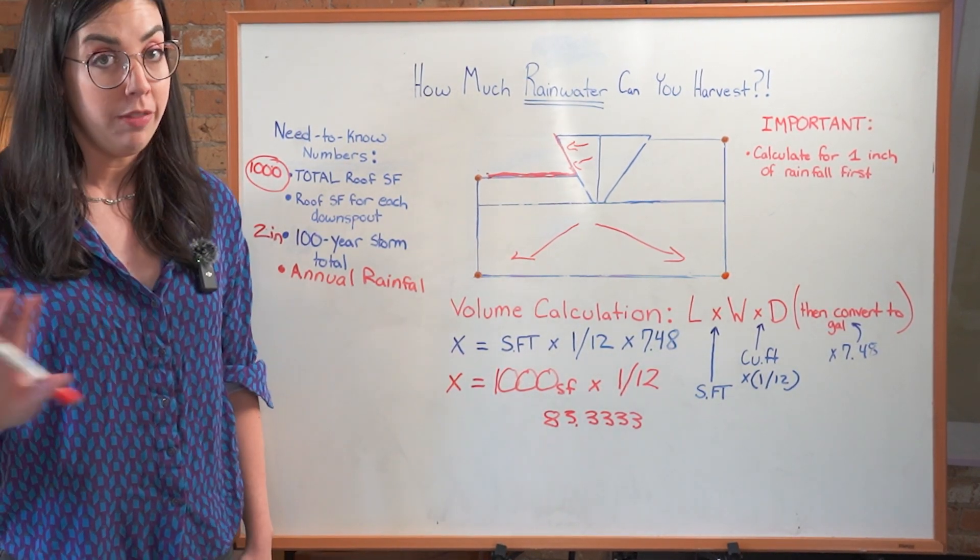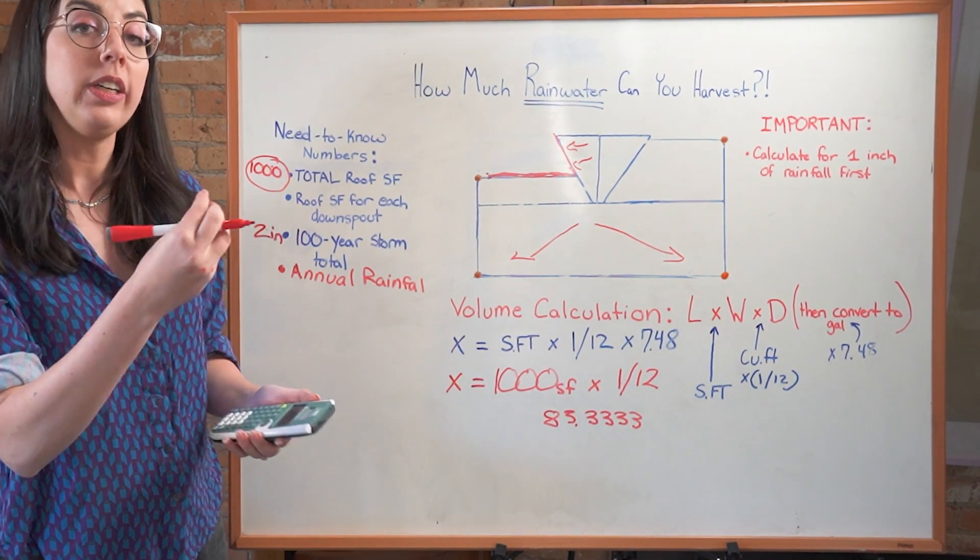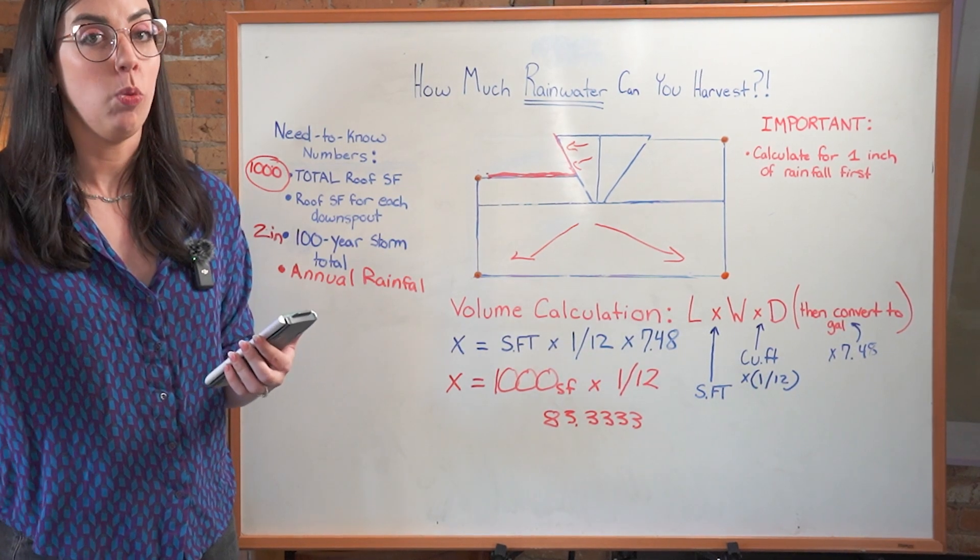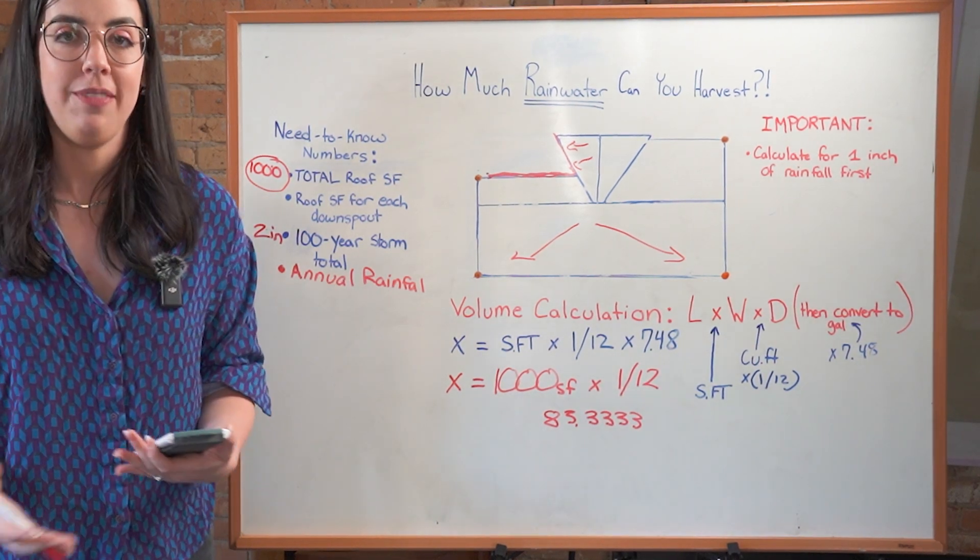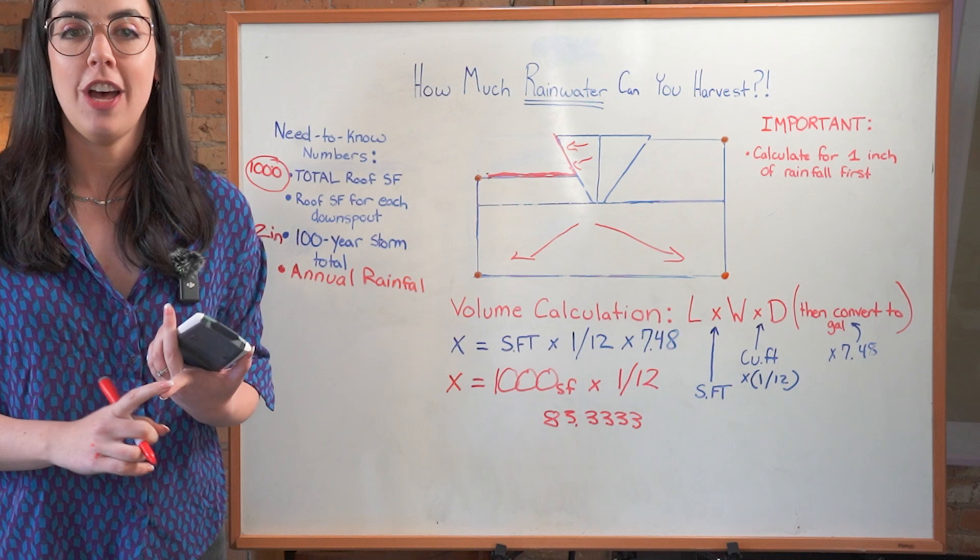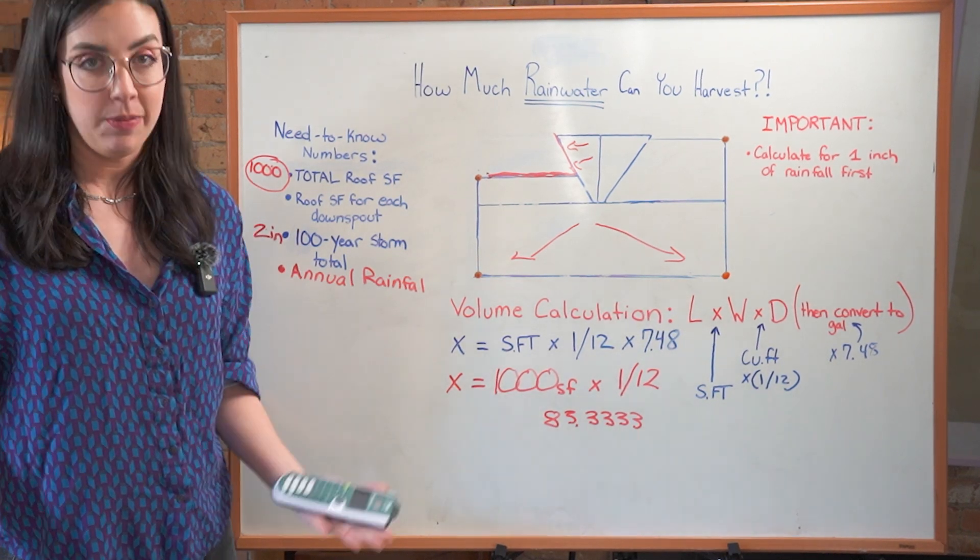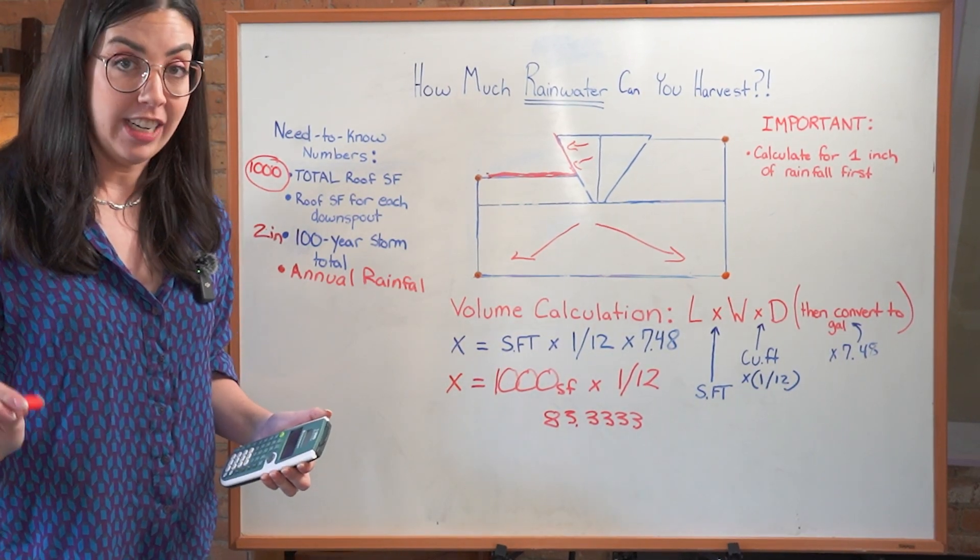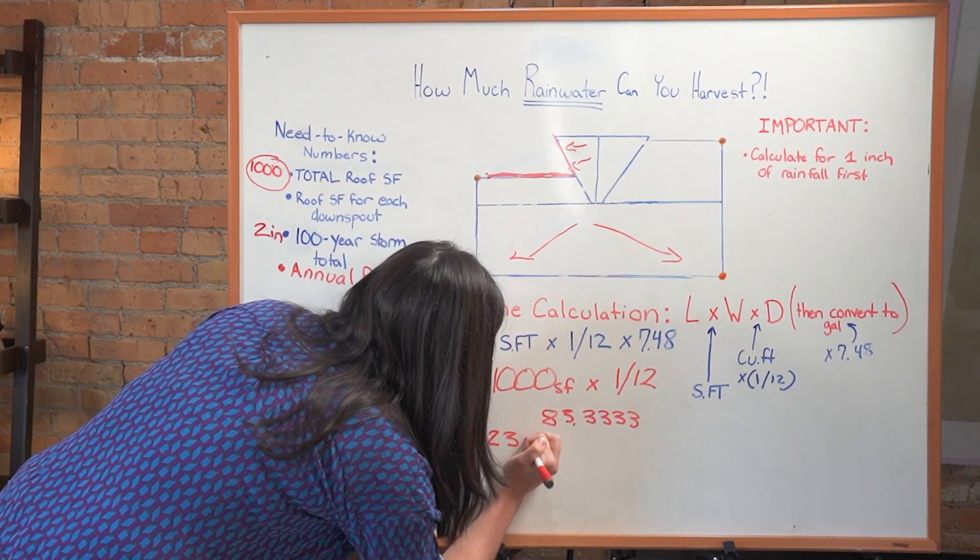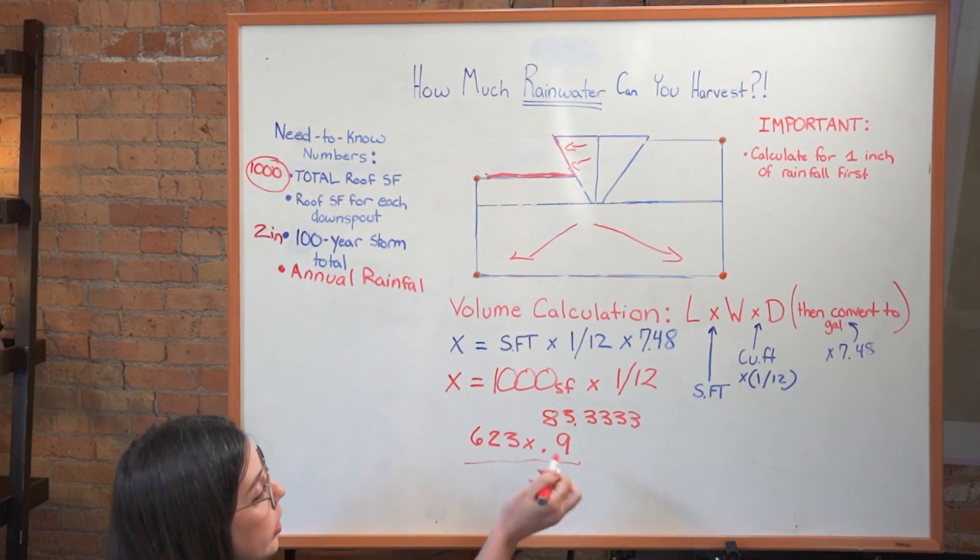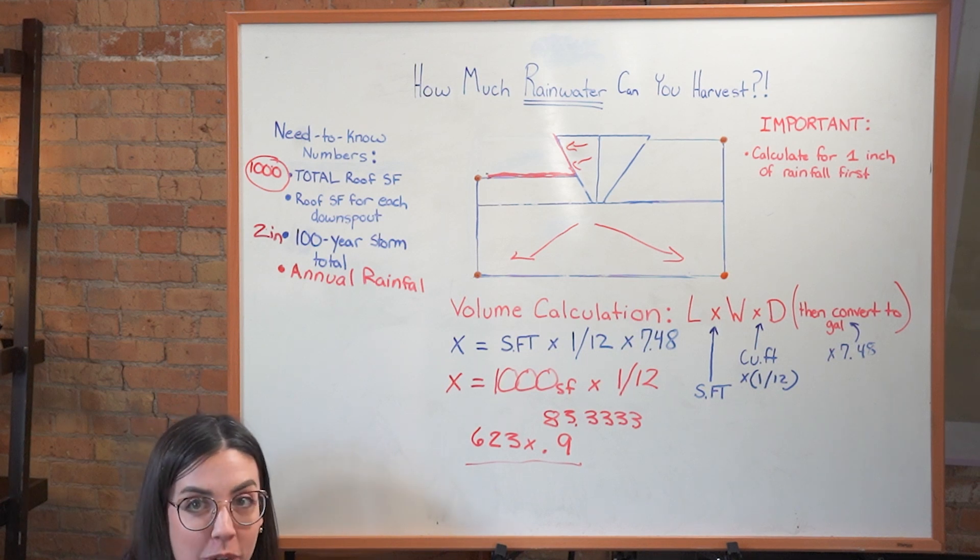Now there is also something called a runoff coefficient. You don't have to get into this if that feels stressful, but that's basically accounting for the material of roof that you have. Some materials will be more efficient at getting the water from the roof to the downspout than others. For example, if you just have a metal roof, congratulations, you have the best material for harvesting rainwater because it doesn't leach toxins and it's also super efficient. So you do not need to use a runoff coefficient. However, if you have an asphalt shingle roof, like most Americans do, the runoff coefficient is 90%. So we multiply this number, which is 623, times 0.9, basically saying we're only accounting for 90% of this water. 561 gallons or 10 55 gallon rain barrels.